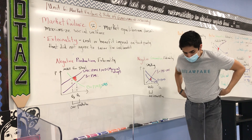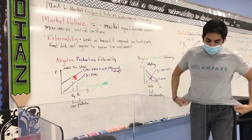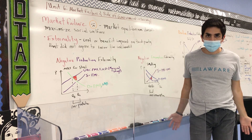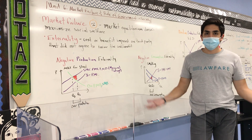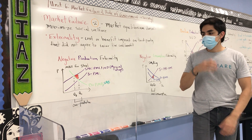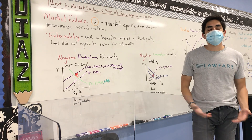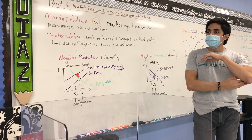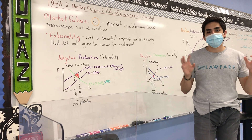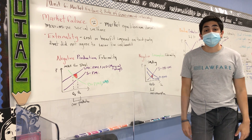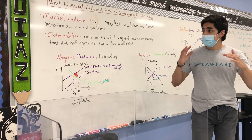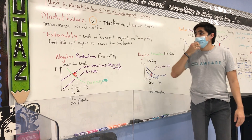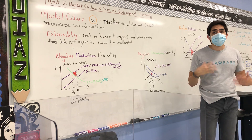And then we found throughout this course, especially as we got into Unit 4 when we were working with imperfectly competitive output markets, and then Unit 5 when we talked about the monopsony model, we found that markets, when you leave them to their own devices, sometimes fail. And what we mean by failure is that the market equilibrium doesn't maximize social welfare.